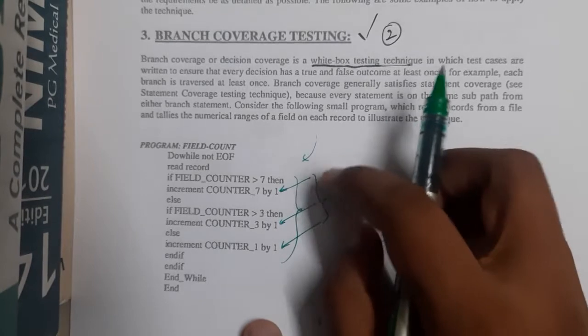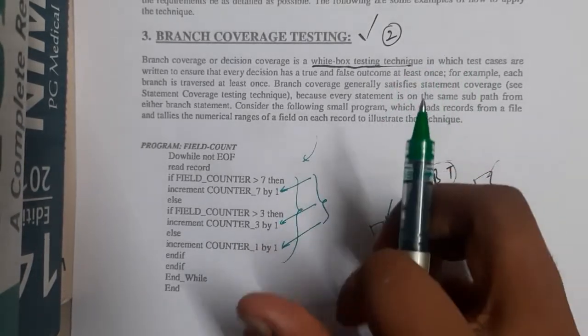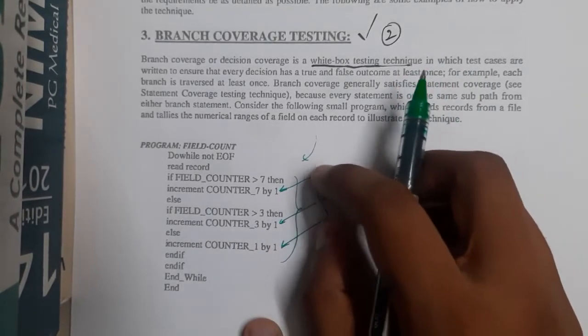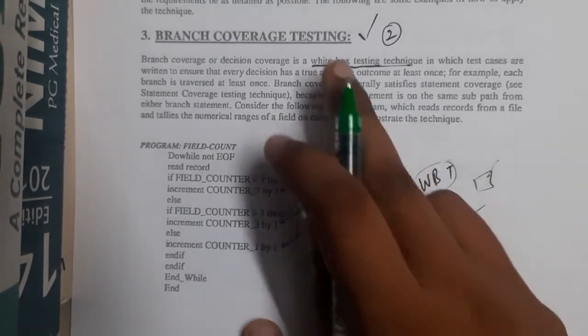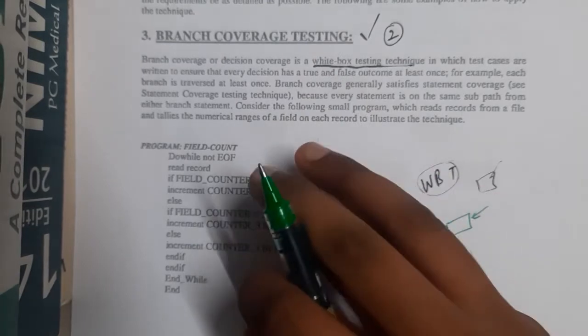In this way, whenever we are having multiple if conditions or loops everywhere, based on the input, the thing acting will change. That is the reason why in branch coverage technique, we give all combinations.